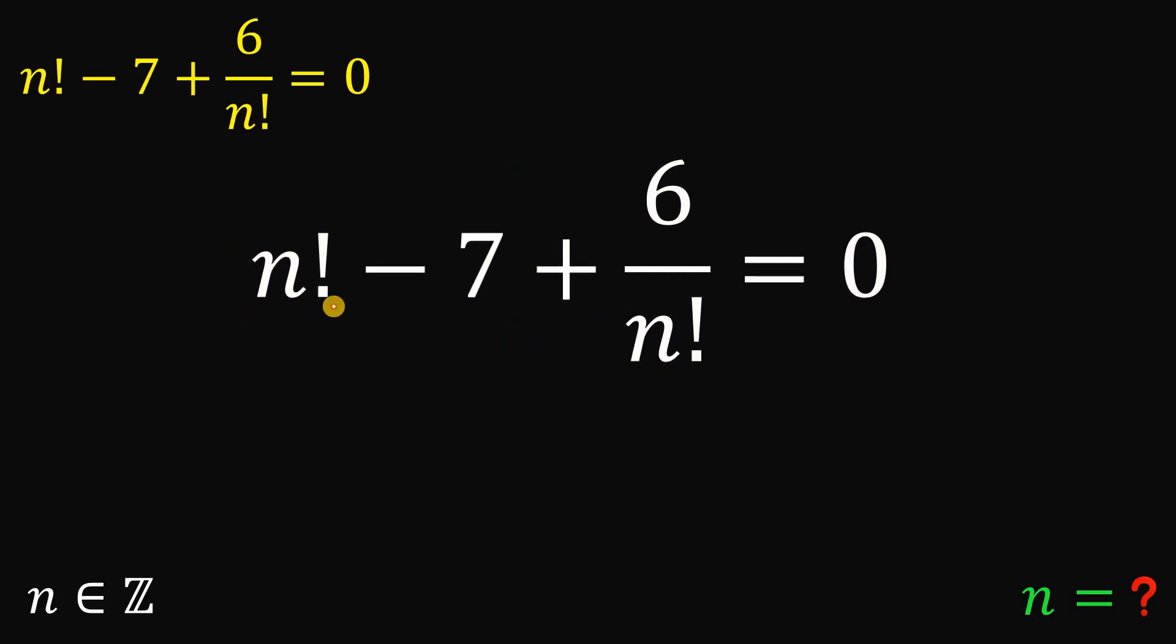One technique that we use in this kind of question is when we see two expressions that are equal, we replace this with another variable. Let's call n factorial equal to a, so all of this n factorial becomes a. And now let's focus on this result.